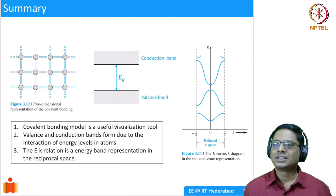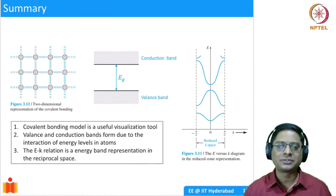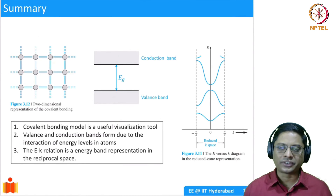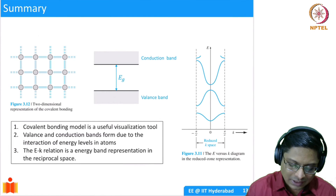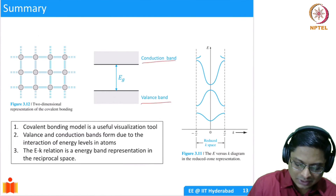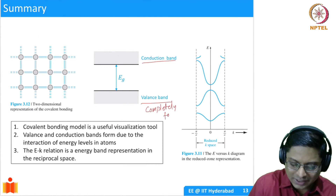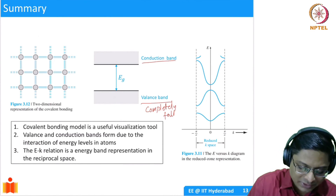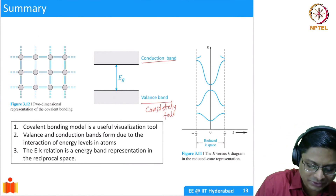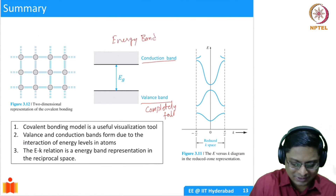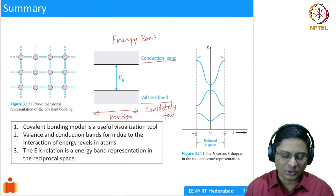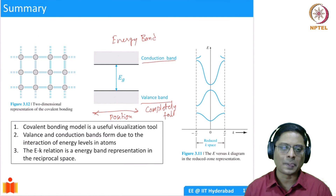The second thing to remember: we had all this discretization coming in and then bands forming. Finally, in silicon the most important thing is the valence shell. When the electrons interact in the valence shell, you end up getting a valence band and a conduction band. The valence band is completely full at zero Kelvin — you can't add more electrons. The conduction band is completely empty. There is an energy gap between the two. This is the energy band representation in physical space — essentially position.